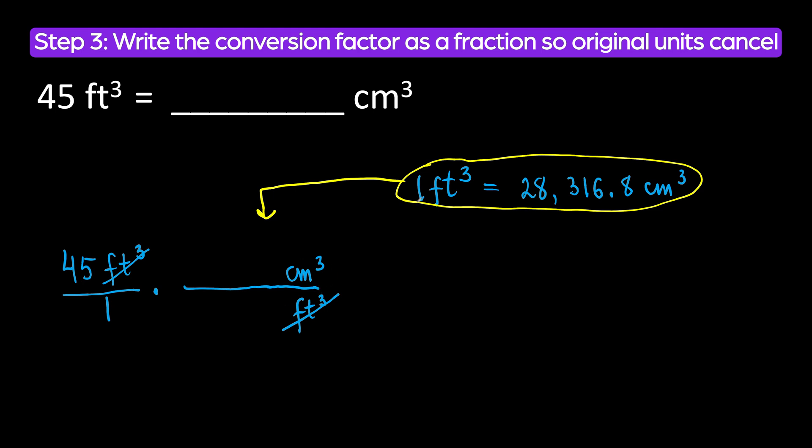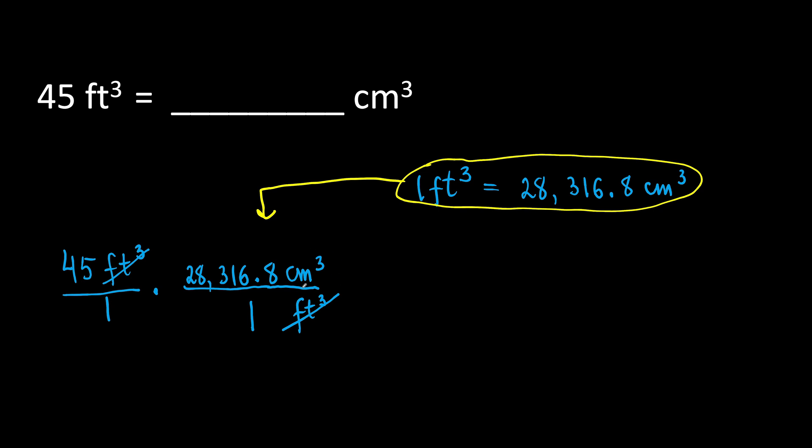Now let's plug in the numbers. So, one cubic foot will go in the denominator and 28,316.8 cubic centimeters will go in the numerator. You see cubic feet canceled out, our original units canceled out, and we are left with the units we need, cubic centimeters.